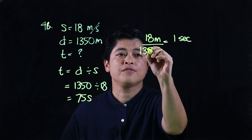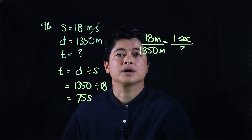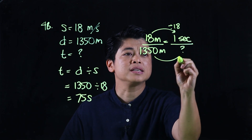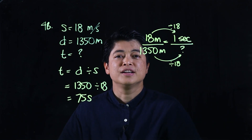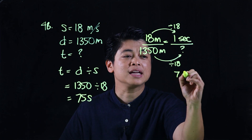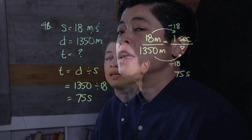So time equals 1350 divided by 18. Using a calculator — and it's fine to use one since a calculator icon is shown — the answer is 75 seconds. Using the equivalent fraction approach: 18 meters equals 1 second, and 1350 meters equals an unknown number of seconds. Dividing 1350 by 18 gives 75 seconds. For parents: use the calculator and formula for calculation, but use the equivalent fraction method for mental solving. That concludes lesson 1 of chapter 7.